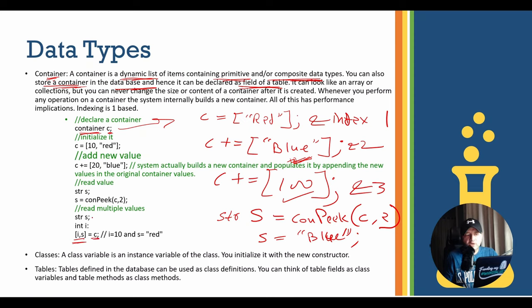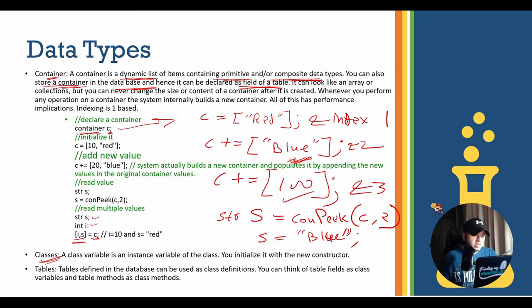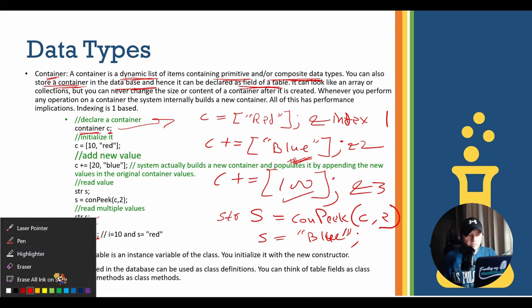There is also a special syntax that lets you fetch multiple values from a container in one go. You declare two variables - for example s as string and i as integer - and then fetch both in a single statement.